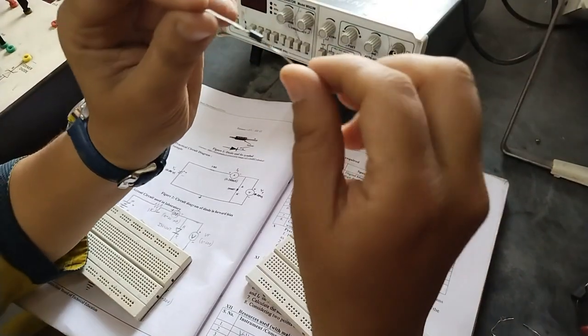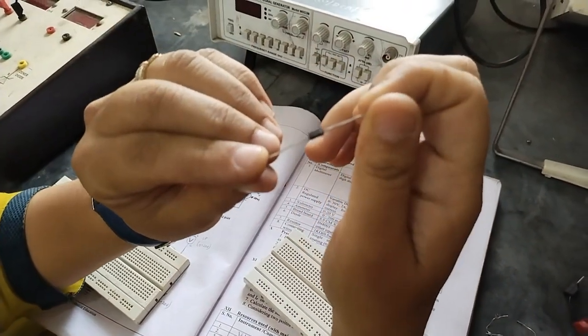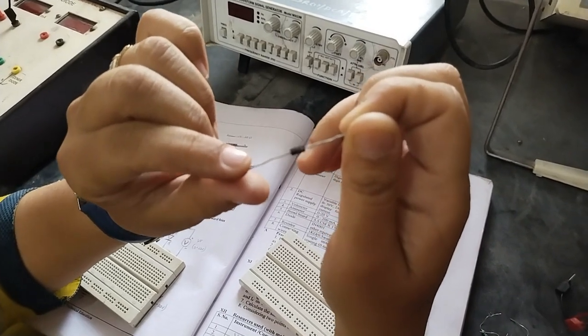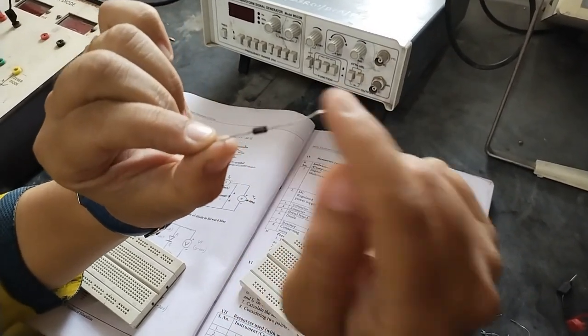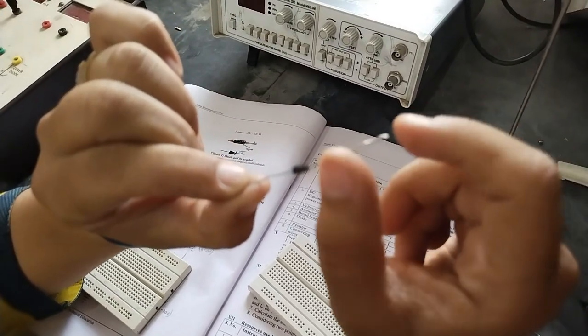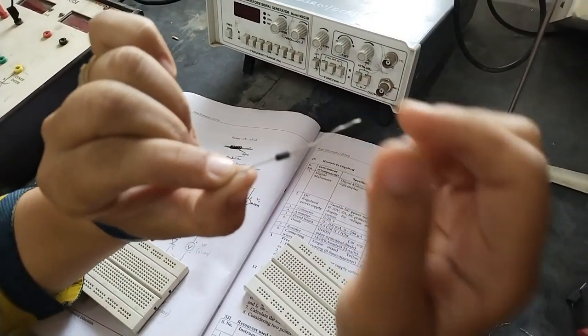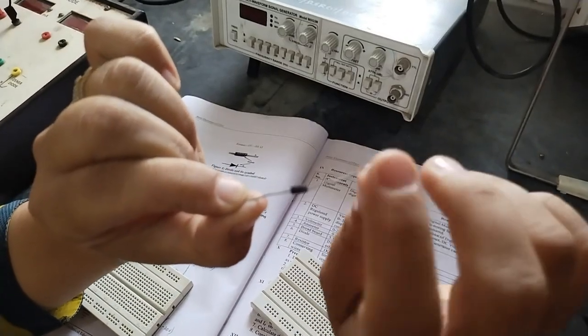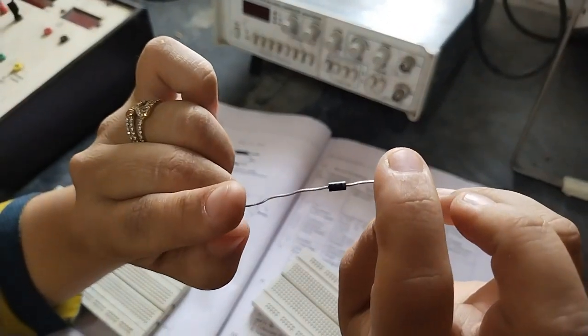This is your PN junction diode. It's number is IN4007. It has a silver color ring on its one side. And another side does not have it. So the ring indicates negative terminal. That means this is your negative terminal and this is your positive terminal.